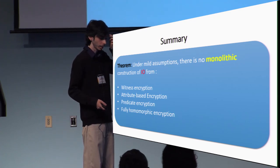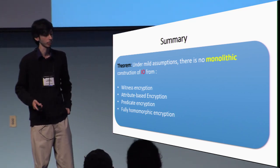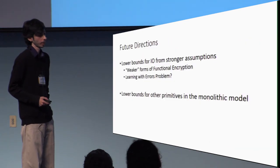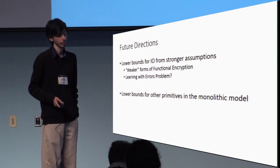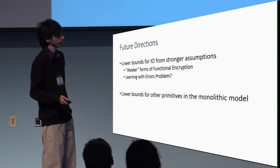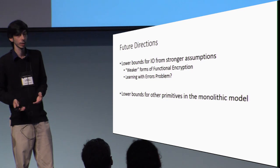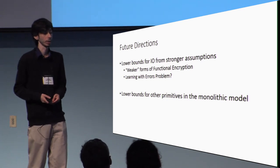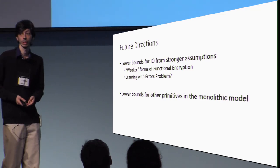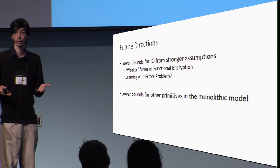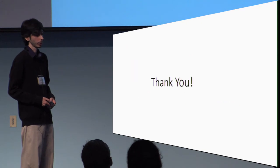In summary, the main result is that there is no monolithic construction of I.O. from any of these primitives. Some directions for future work include looking at lower bounds for I.O. from stronger assumptions such as alternative or weaker forms of functional encryption, or perhaps even from the learning with errors problem — we still don't know whether LWE implies I.O. We also want to look at other applications of the monolithic model for finding lower bounds for other primitives that exhibit this kind of self-eating behavior, as this seems like a very useful model.